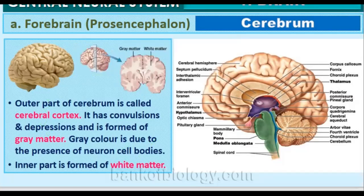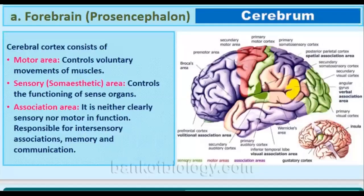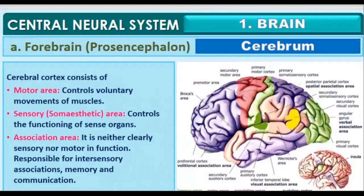Let us go to the next slide covering the regions of the cerebrum. The first region of the cerebral cortex is the motor area. There is also a sensory area and an association area. The motor area is related to our voluntary actions — whatever we do by brain is related to that. The sensory area is related to our senses, and the association area acts as a linkage between the motor area and the sensory area.